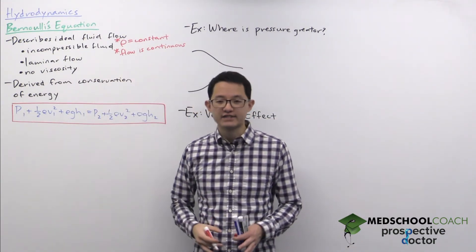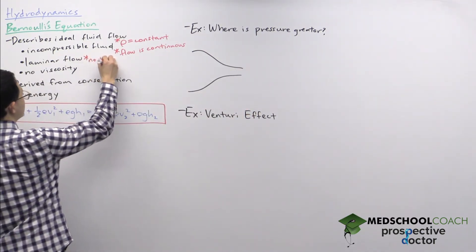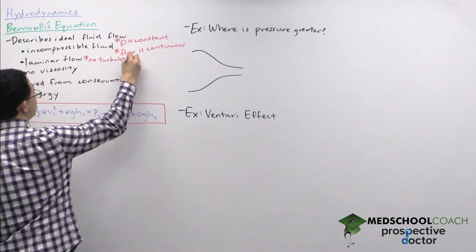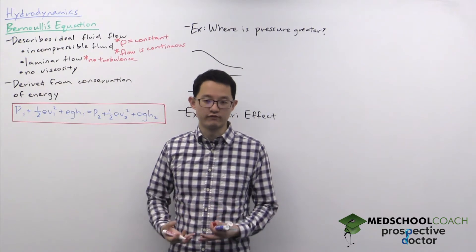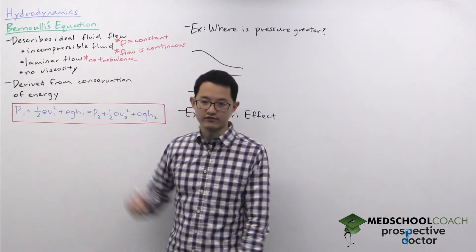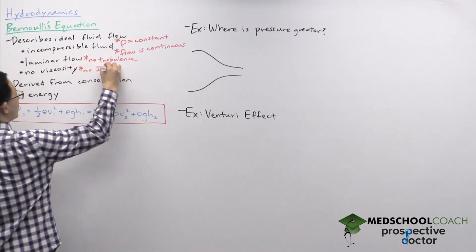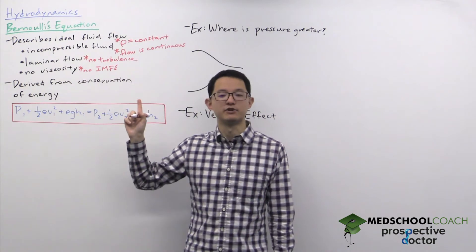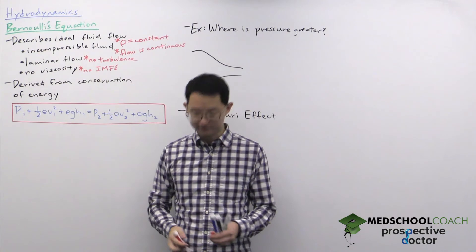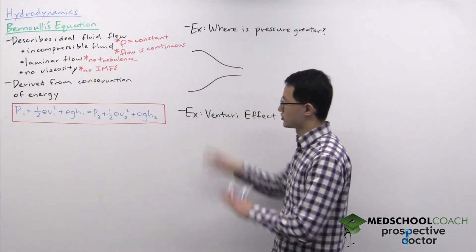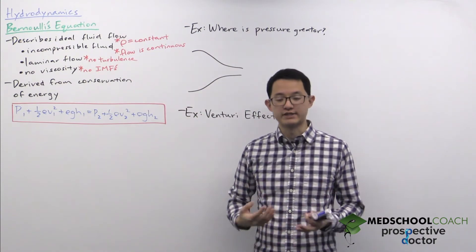Next, the fluid flow has to be laminar — meaning there cannot be any turbulence. And number three, there has to be no or negligible viscosity. Since viscosity is the result of intermolecular forces, this is essentially saying there are no IMFs. In this way it's very similar to ideal gases, which also do not have intermolecular forces. If these three requirements are fulfilled, you can apply Bernoulli's equation.